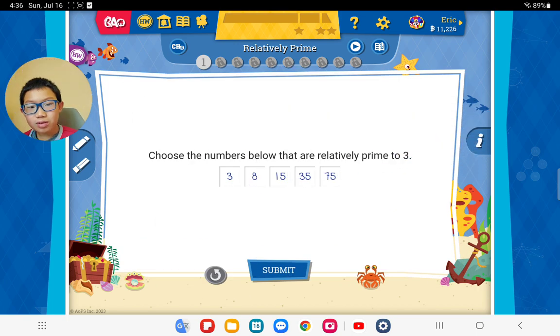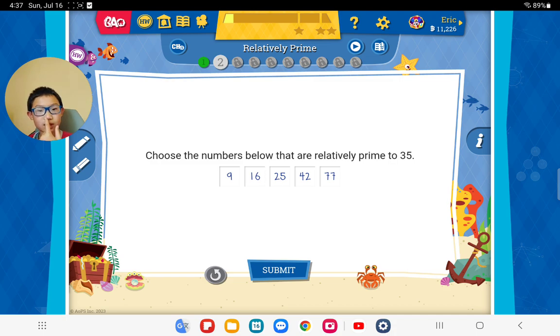Choose the numbers below that are relatively prime to 3. Definitely not 3. We just need to make sure which of the words do not have 3 in the family, 4 factors. This one does it. And this one does. Keep going. Good. Good job. I think you understand it.